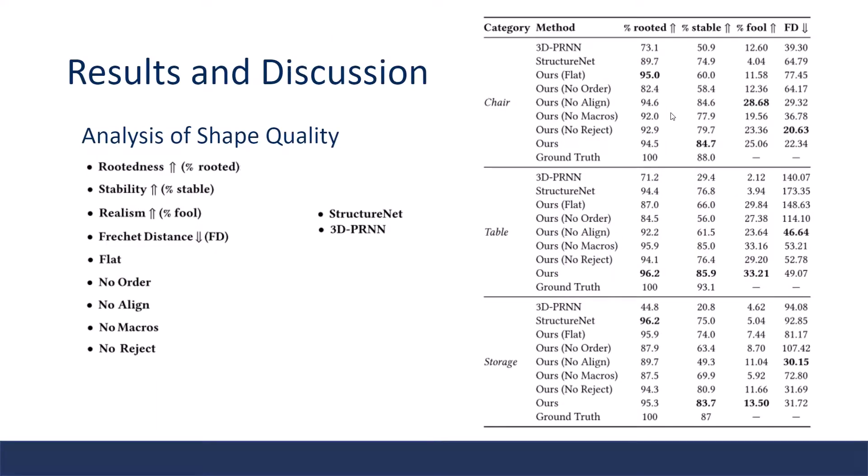Now let's go on to the result part. For quantitative comparisons, there are two baselines. The StructureNet is a variational auto-encoder that generates hierarchical part graphs with a cuboid at each node. The 3D-PRNN is a recurrent neural network that generates a sequence of cuboids. A series of ablated versions of models are also tested.